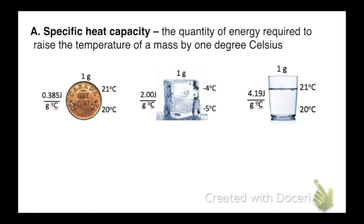Okay, so specific heat capacity. The definition is the quantity of energy required to raise the temperature of a mass by one degree Celsius. So what does that mean? Well, mass. Each one of these weighs one gram.